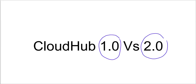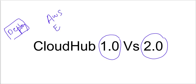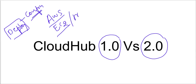We have CloudHub 1.0 and CloudHub 2.0, and there is a basic backend difference between these two. Whenever I deploy my application — it could be in shared space, VPC, or private space — the moment I hit deploy in CloudHub 1.0, we get an AWS EC2 instance that spins up based on the configuration I pass. We call it a Mule worker, and on top of it my Mule app gets hosted.